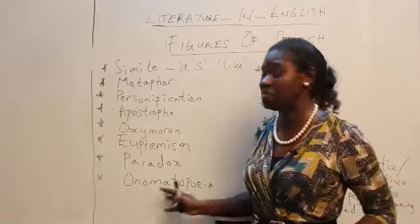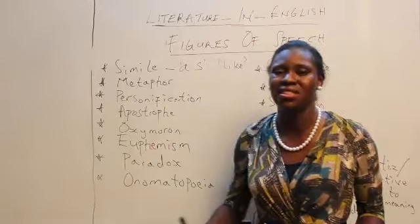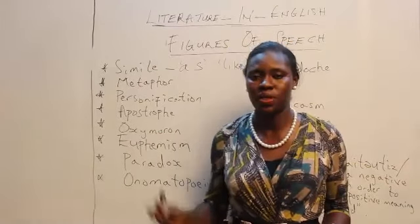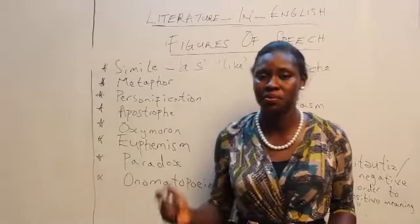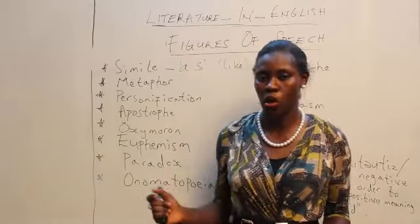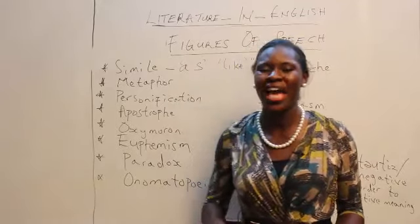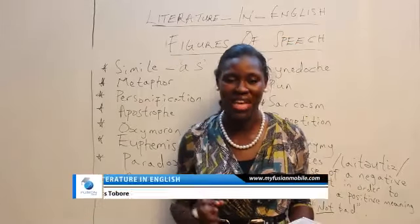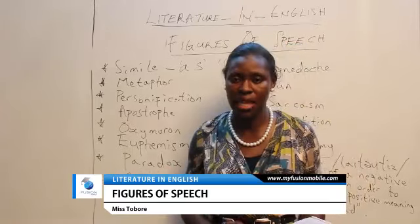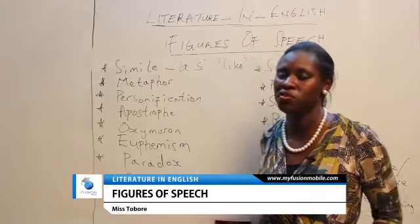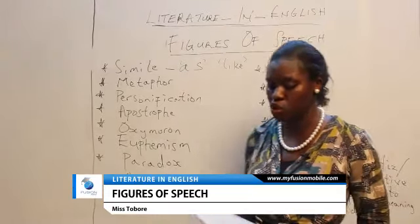Now, onomatopoeia. This is very simple to identify. Onomatopoeia simply refers to words that depict sounds. For example, 'can you hear the tick-tock of the clock?' — 'tick-tock' portrays the sound of a clock. 'The cockatoo of the hen' — cockatoo is the sound a hen makes. 'The roaring of the lion,' 'the splashing of water,' 'the crashing of waves' — these are all examples of onomatopoeia.